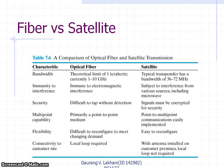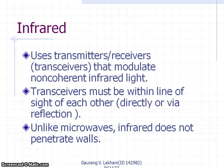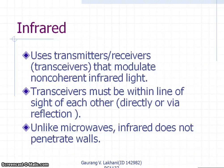Comparing fiber optic cable with satellites: optical fiber is more useful for shorter distances, while radio is omnidirectional and microwave is directional. Infrared uses non-coherent infrared light. The assignment for students is to compare fiber optic cable transmission and satellite transmission across various parameters. Thank you very much.